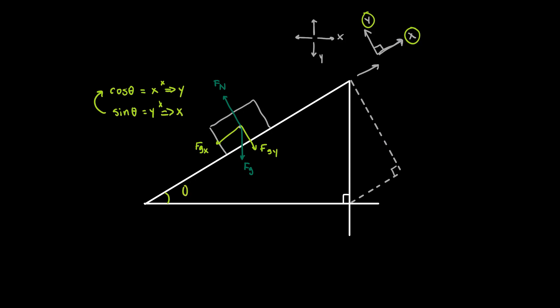So if this angle right here is theta, and we know that this angle here is 90 degrees, we can conclude that theta plus whatever this angle up here is need to add up to 90. So this angle is 90 minus theta, based on the fact that the internal angles of this triangle need to add up to 180 degrees total. If this angle is theta and we draw this triangle, which has a side sitting at 90 degrees, we can conclude that this angle has to be theta.